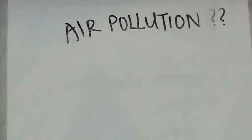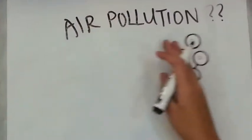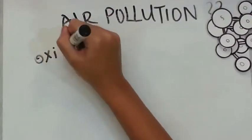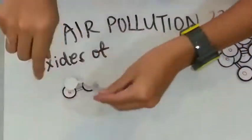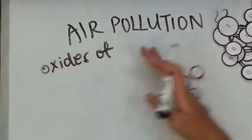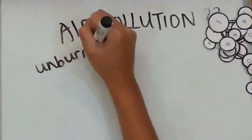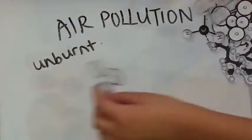Some examples of air pollutants include carbon monoxide, sulfur dioxide, oxides of nitrogen, unburnt hydrocarbons, unburnt methane and unburnt ozone.